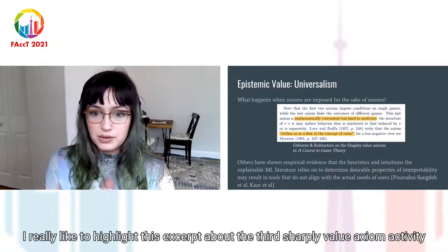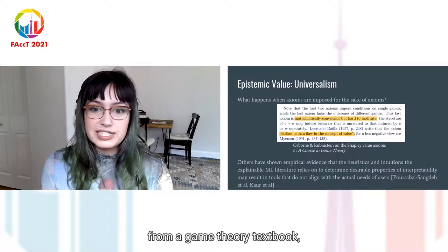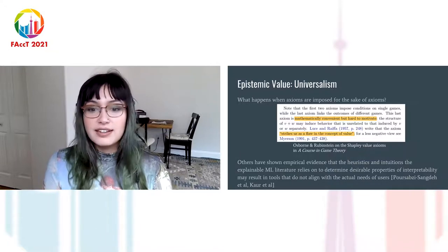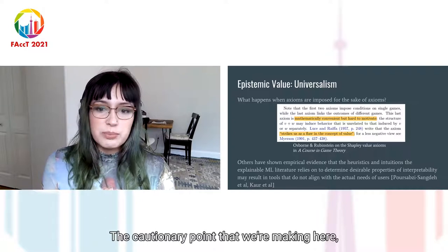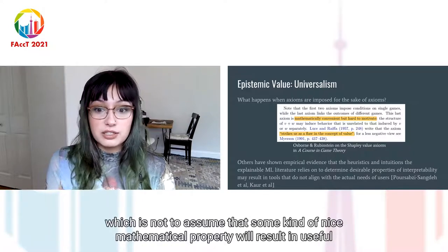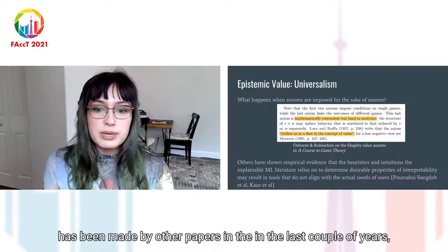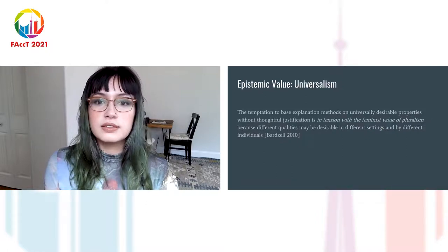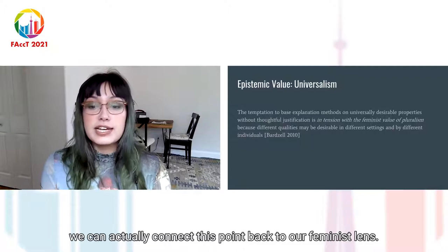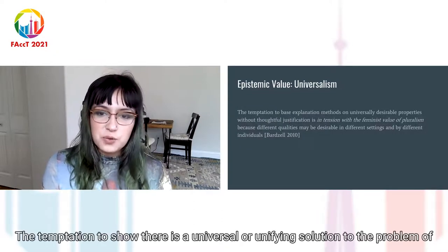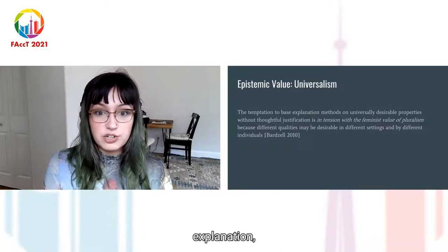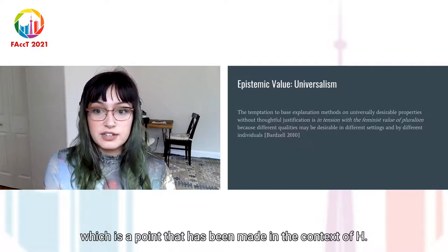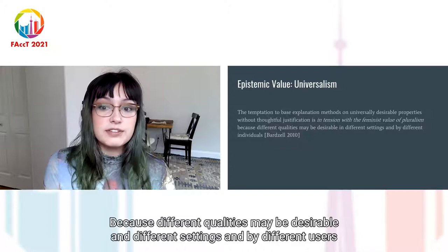I really like to highlight this excerpt about the third Shapley value axiom, additivity, from a game theory textbook which casts doubt on why it is included at all. The authors call it mathematically convenient but hard to motivate, and this criticism has been around for decades. The cautionary point here — not to assume that a nice mathematical property will result in useful explanations — has been supported by user studies in recent papers. We can connect this back to our feminist lens: the temptation to show there is a universal or unifying solution to the problem of explanation, which I've called universalism, is in tension with the value of pluralism, because different qualities may be desirable in different settings and by different users.